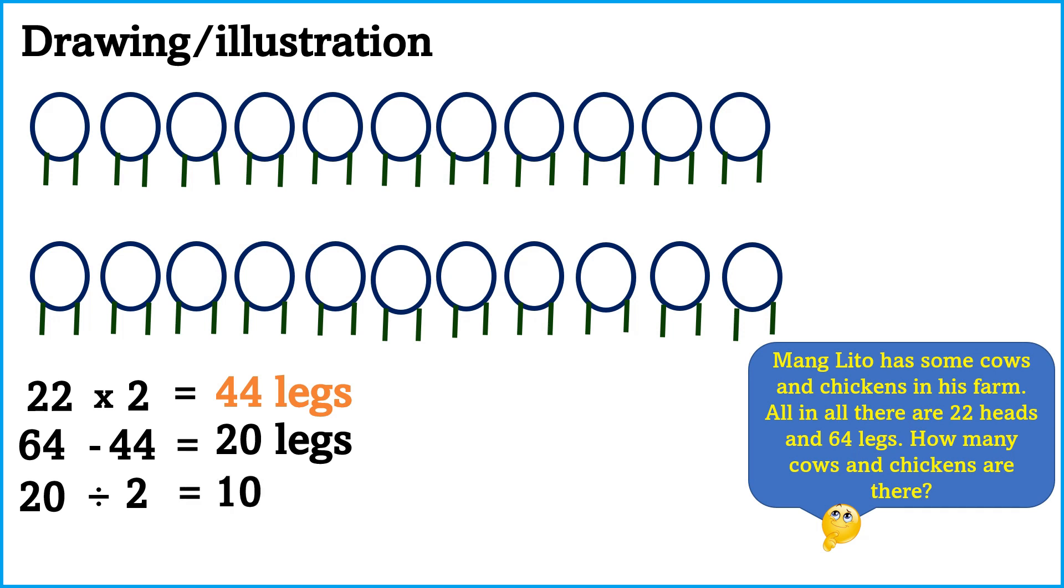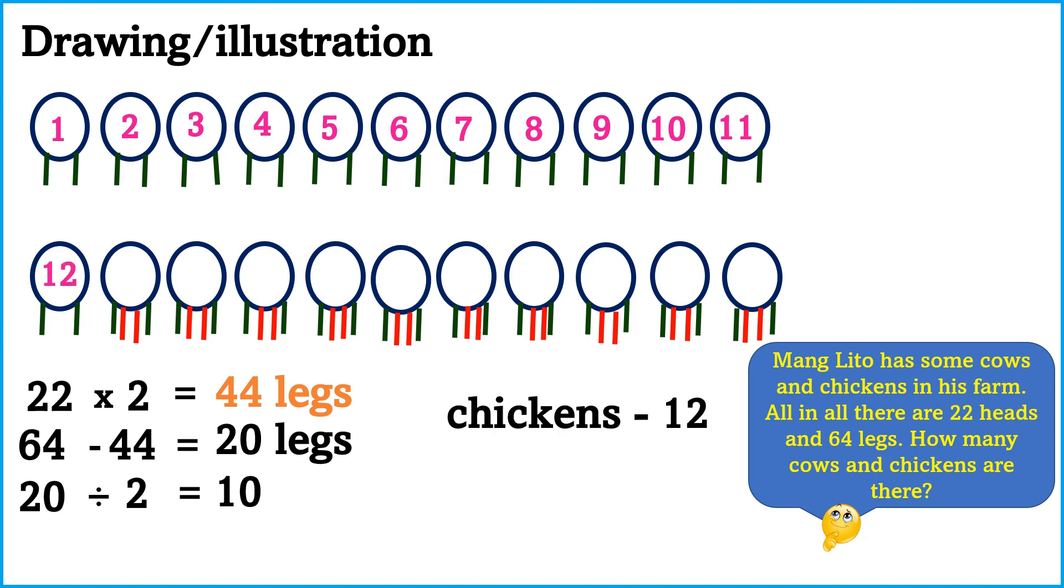20 divided by 2, the answer is equal to 10. So we're going to put additional 2 legs to 10 heads. Next, we're going to count the heads with 2 legs. Therefore, there are 12 chickens since chickens have 2 legs.